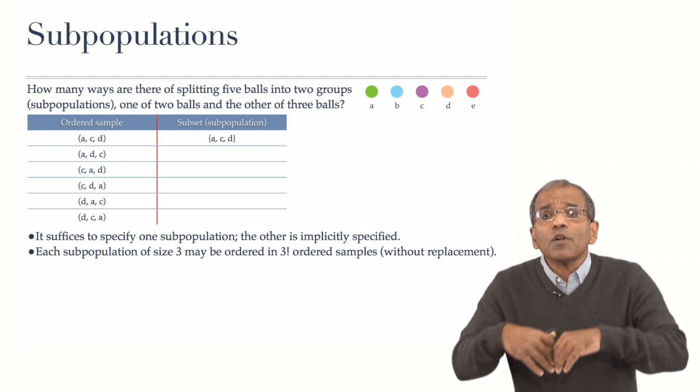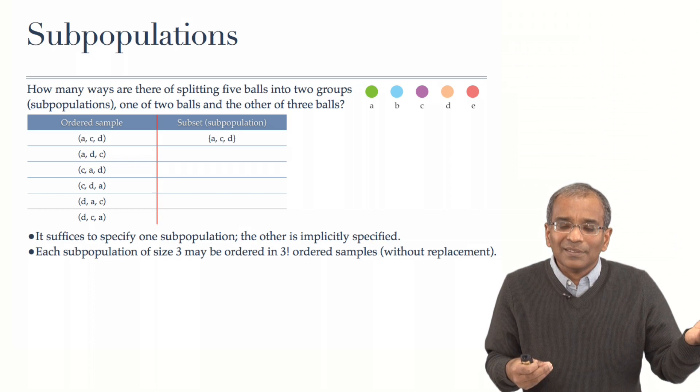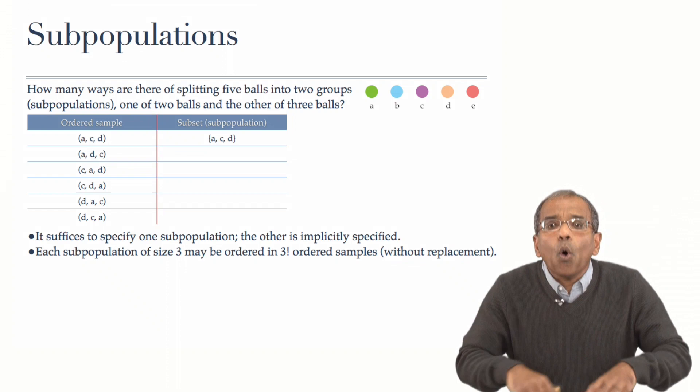And therefore, the number of different subpopulations you could engender multiplied by six, or more precisely in our context, three factorial,